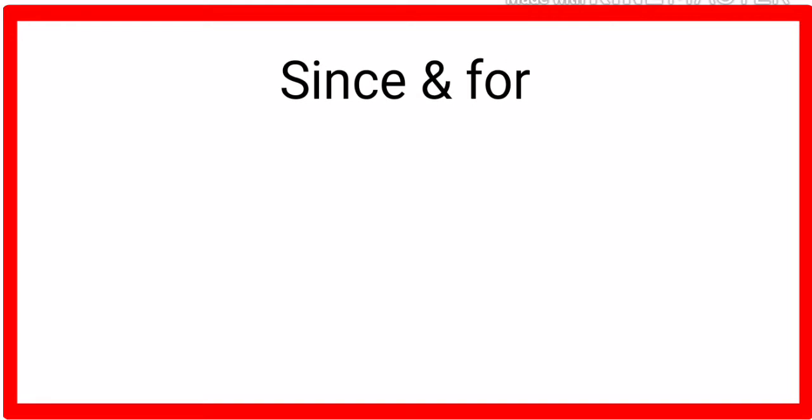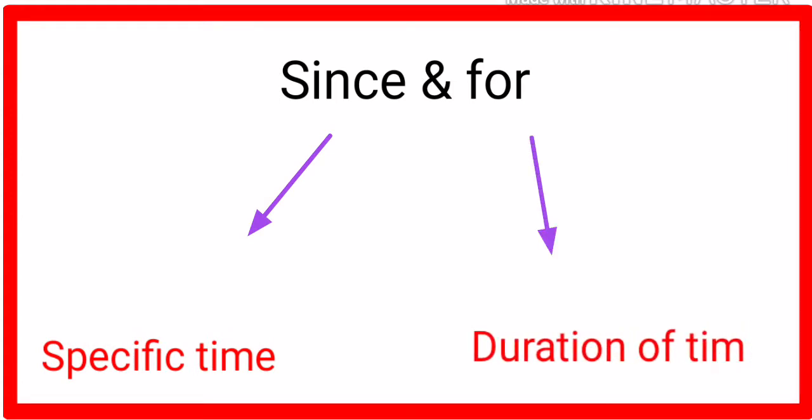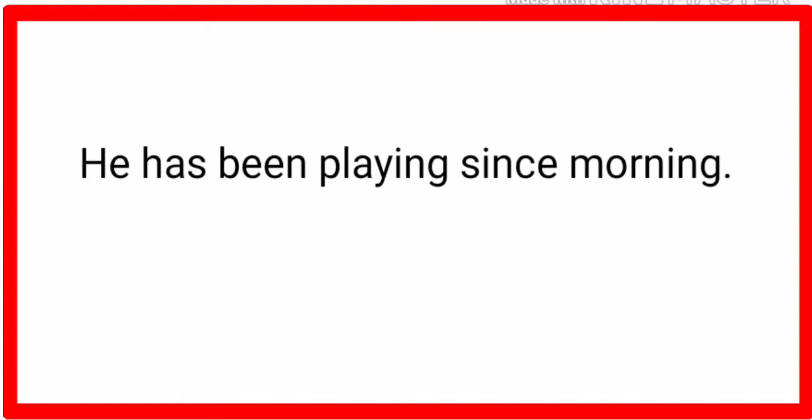Welcome back to my channel. In today's video you are going to learn how to use 'since' and 'for'. 'Since' is used for specific time — exact time. Look at this example: 'He has been playing since morning.' In this sentence we used 'since morning' because morning is specific time, that's why we use 'since'.